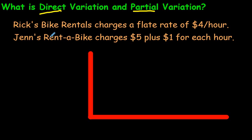Let's give two examples here of direct and partial variation and hopefully it will make sense to you very quickly what they are. Let's check this one out. Rick's bike rentals charges a flat rate of $4 per hour. So he's charging $4 per hour.